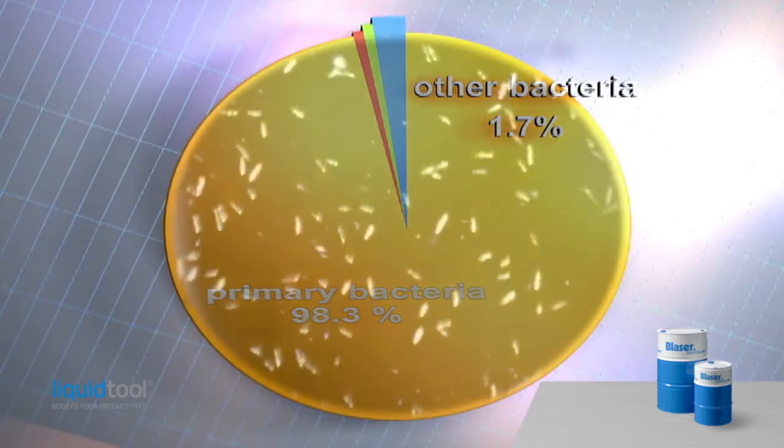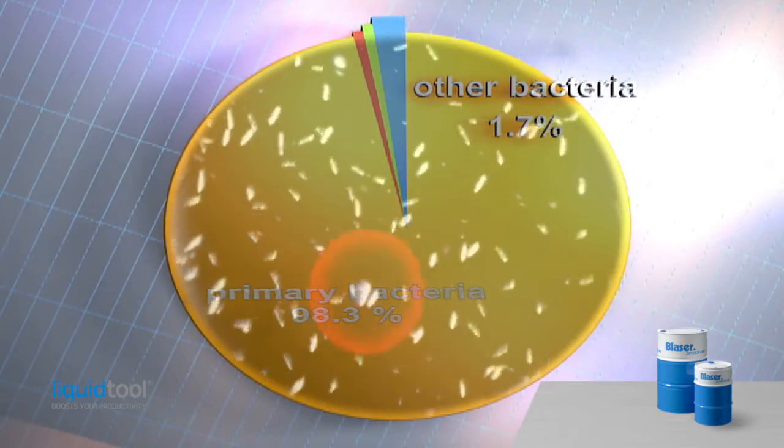These so-called primary bacteria naturally overcome undesirable bacteria. The primary bacteria overcome the other bacteria by consuming the available nutrition, thus limiting and defining overall bacteria growth.